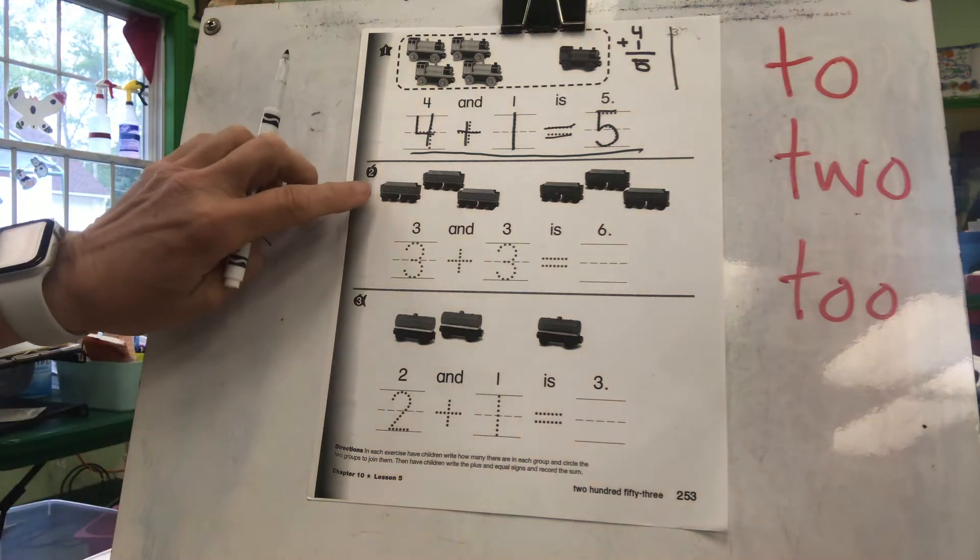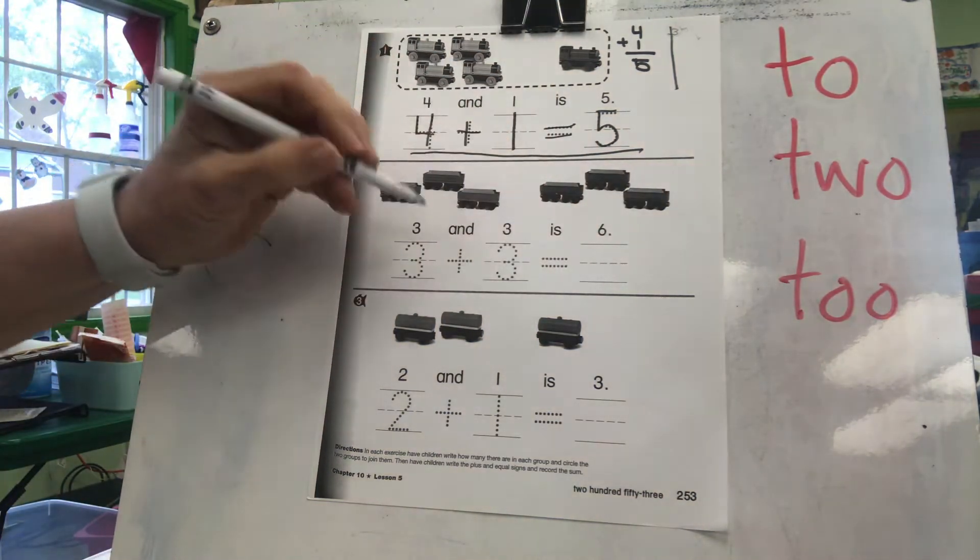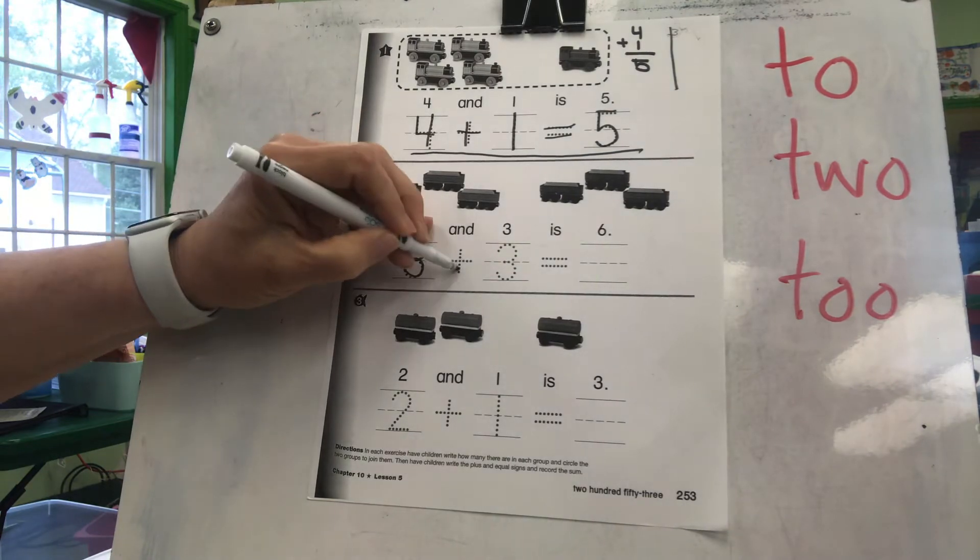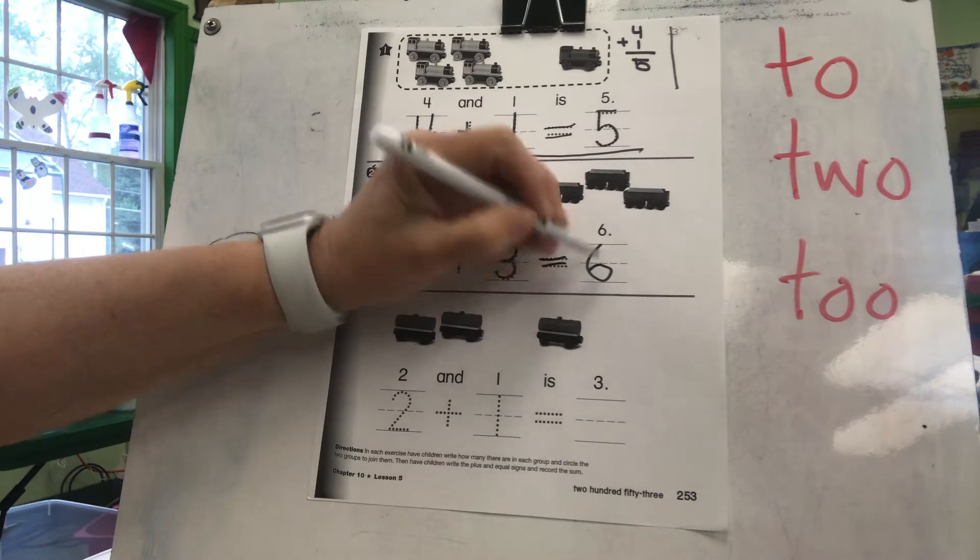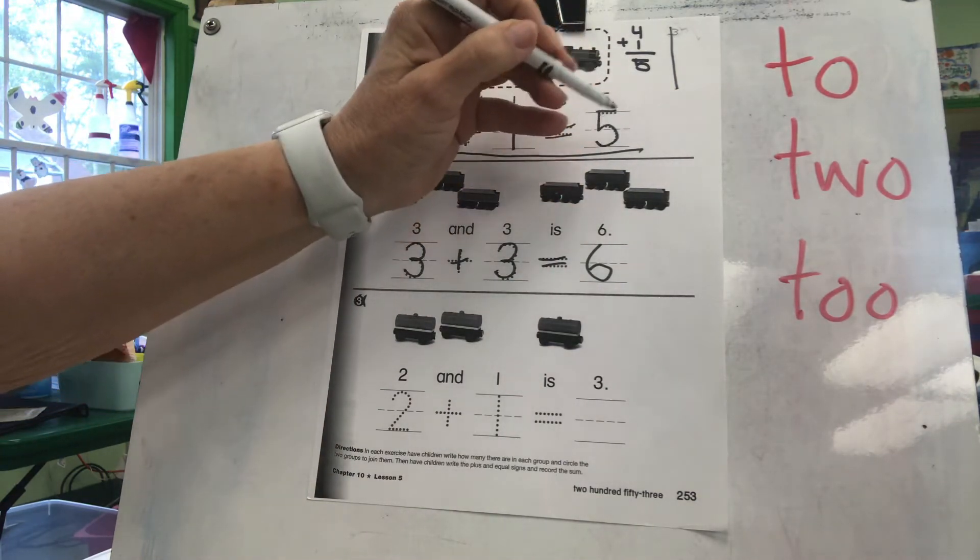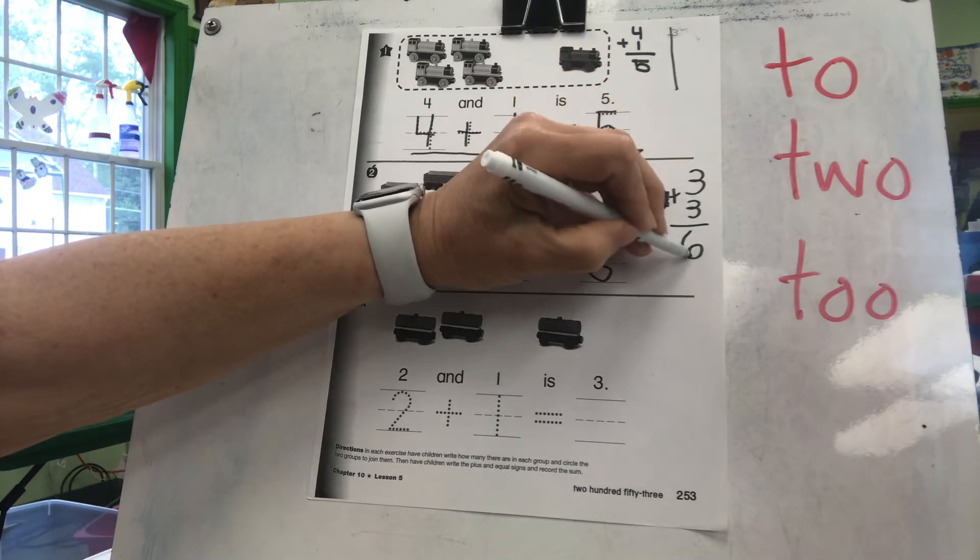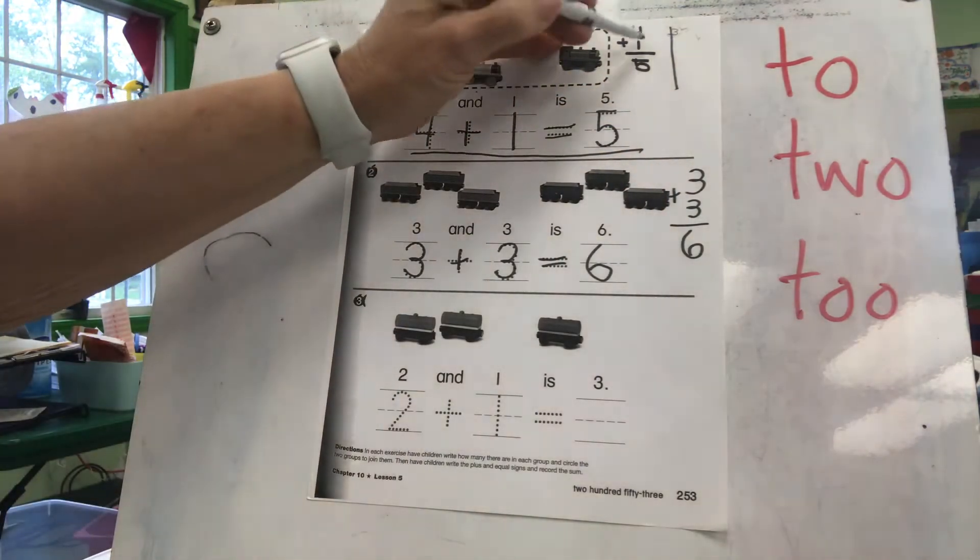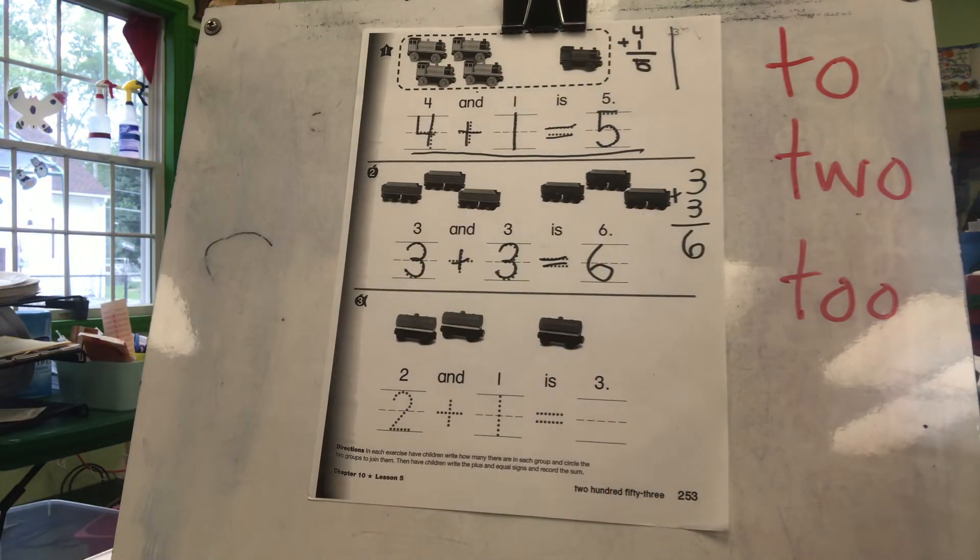Now we're going to look at the next one. Three and three more is six. So write it. Three plus three equals what? Six. And then please put the up and down vertical equation. Three plus three equals six. So we have one, two, three ways of writing that sentence. Put me on pause. Do it by yourself. One, two, three, go.